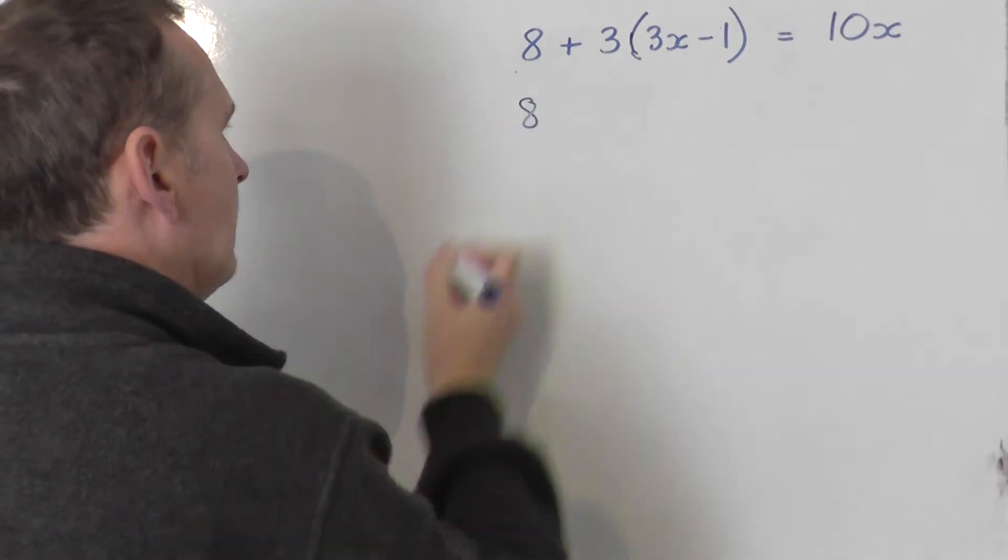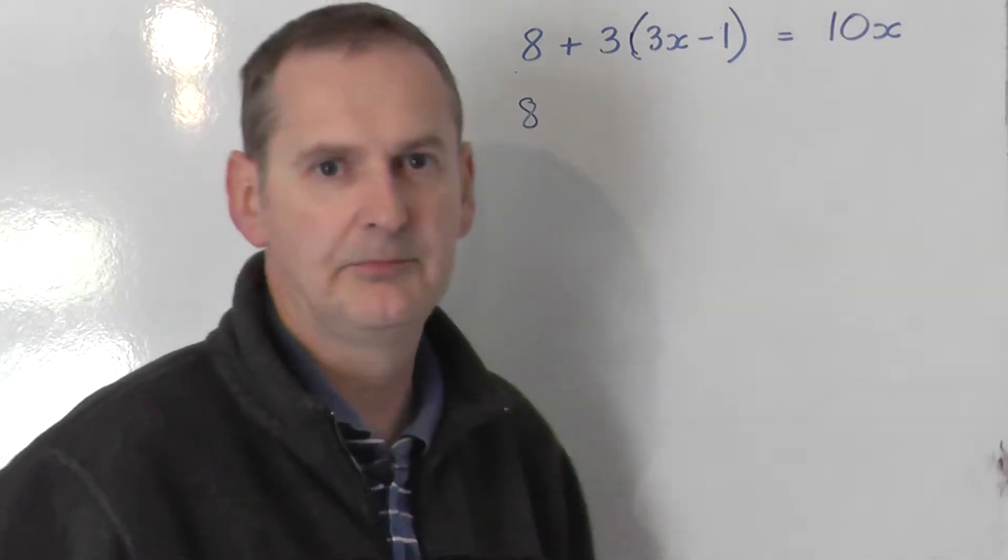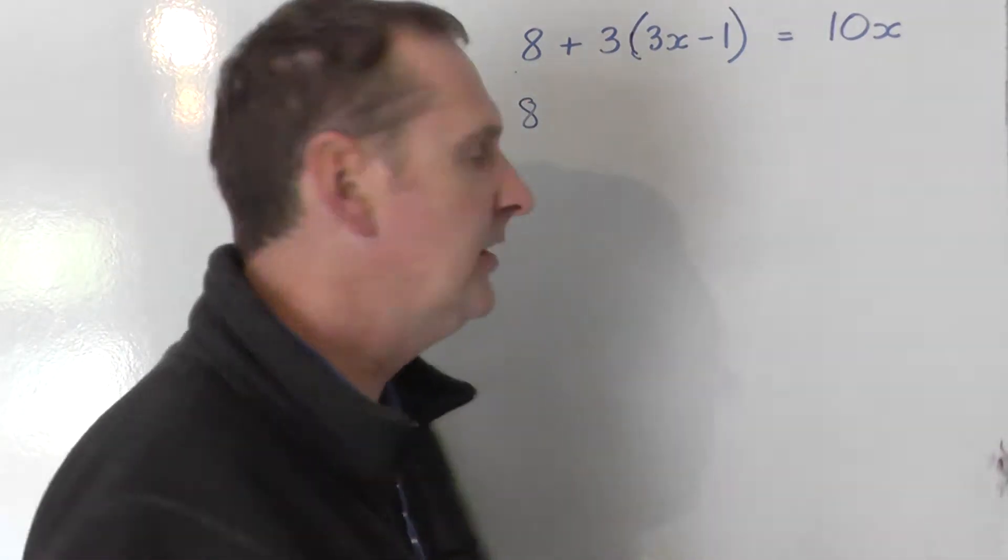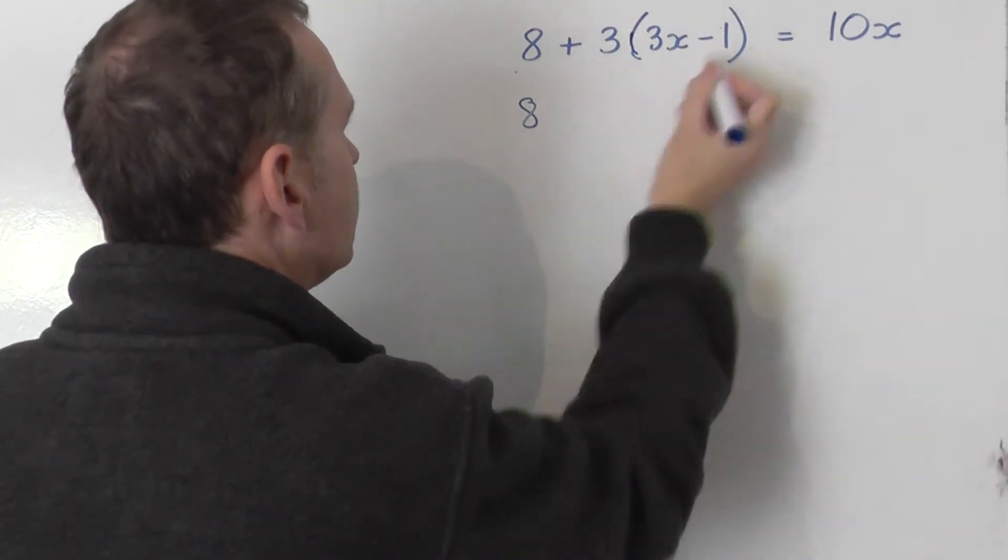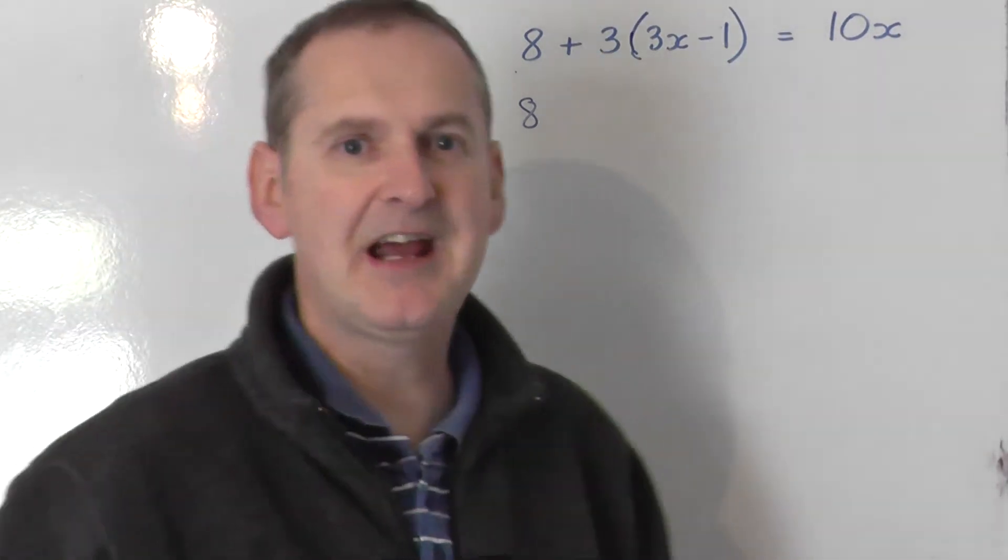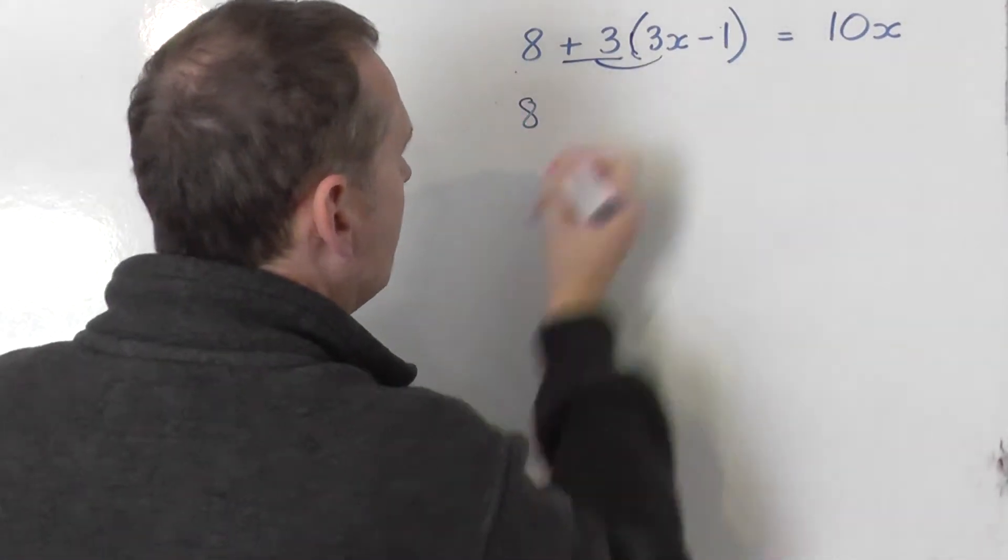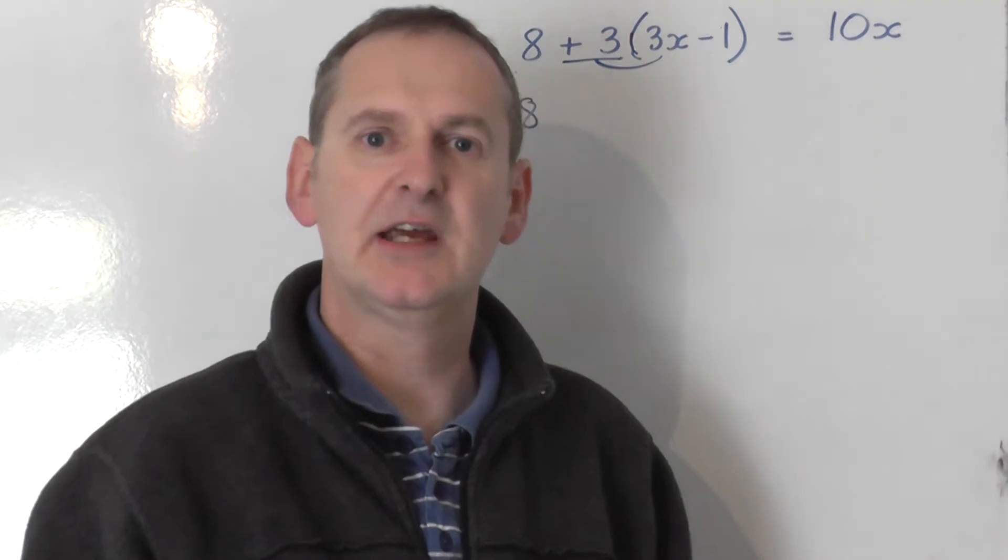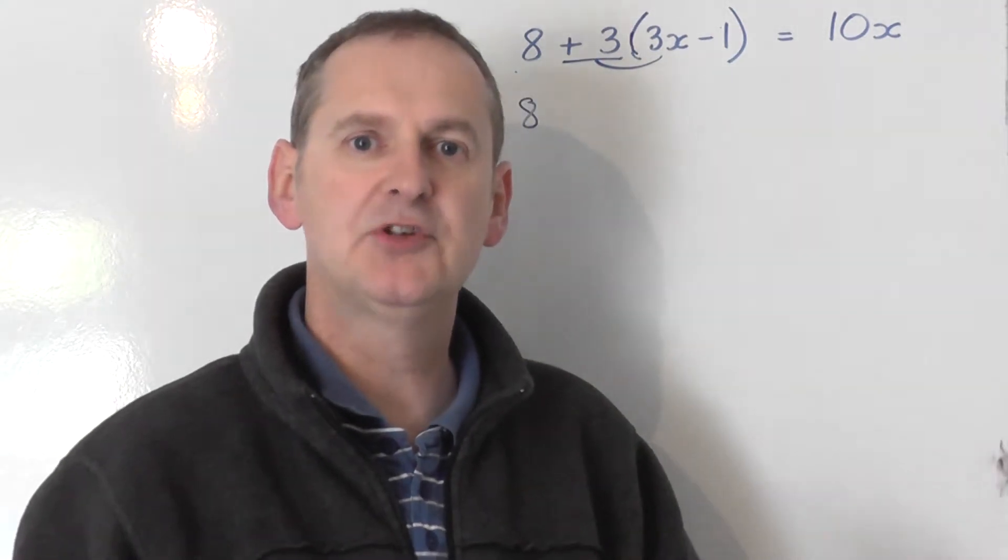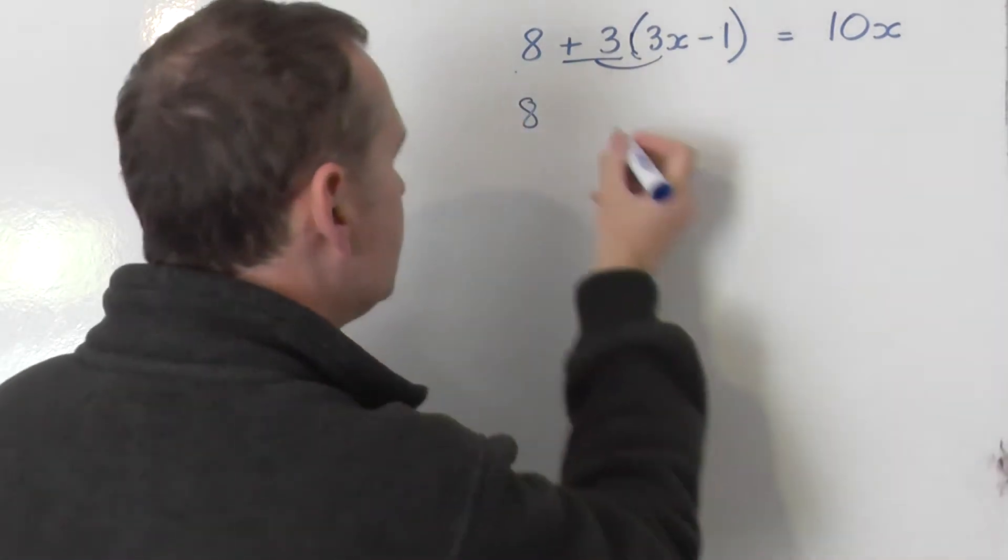The 8 goes straight down. Do not change that at all. So we've got 8 plus we've got 3 lots of the bracket. So notice now how I expand this out. I'm going to say positive 3 multiplied by that 3x. A positive 3 multiplied by 3x is positive 9x.